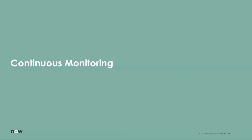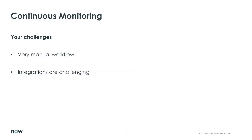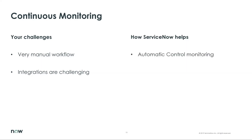An important part of GRC is continuous monitoring. Many organizations have controls monitoring capability, but it is highly manual with no easy way to integrate with various sources. With control indicators, customers can pull automated evidence and monitor controls automatically. They can integrate with various sources and pull relevant results that can be presented to auditors, showing real-time effect on risk.